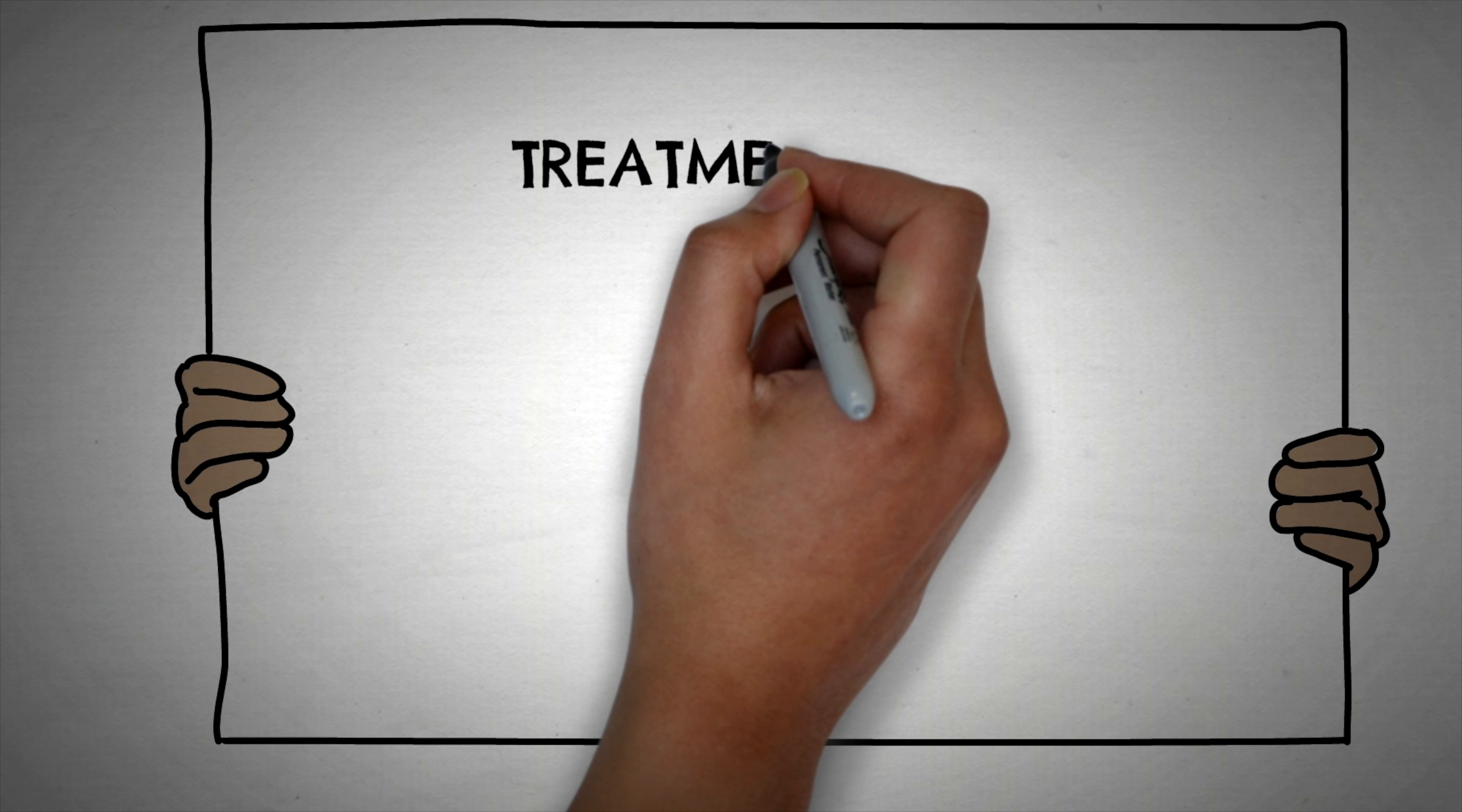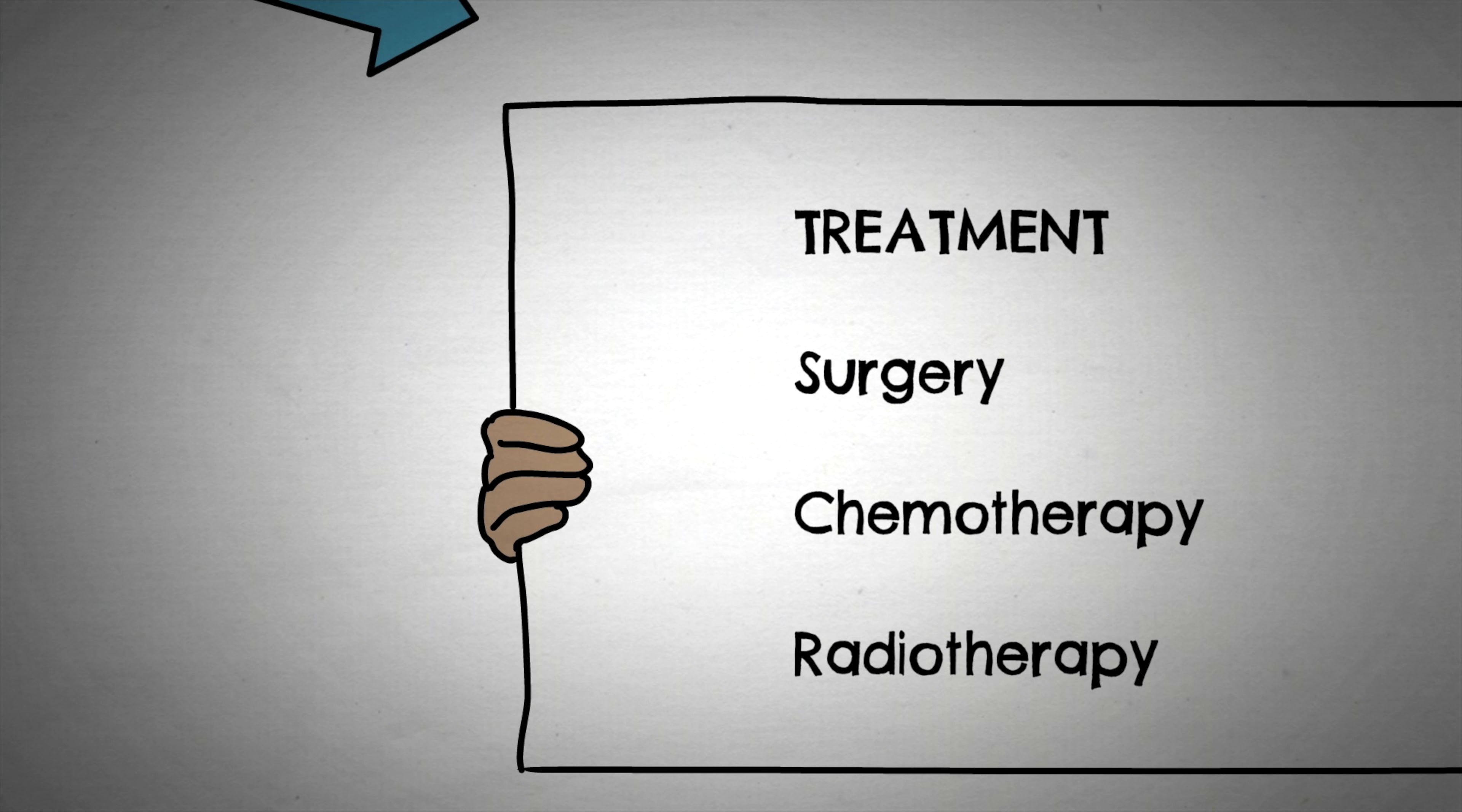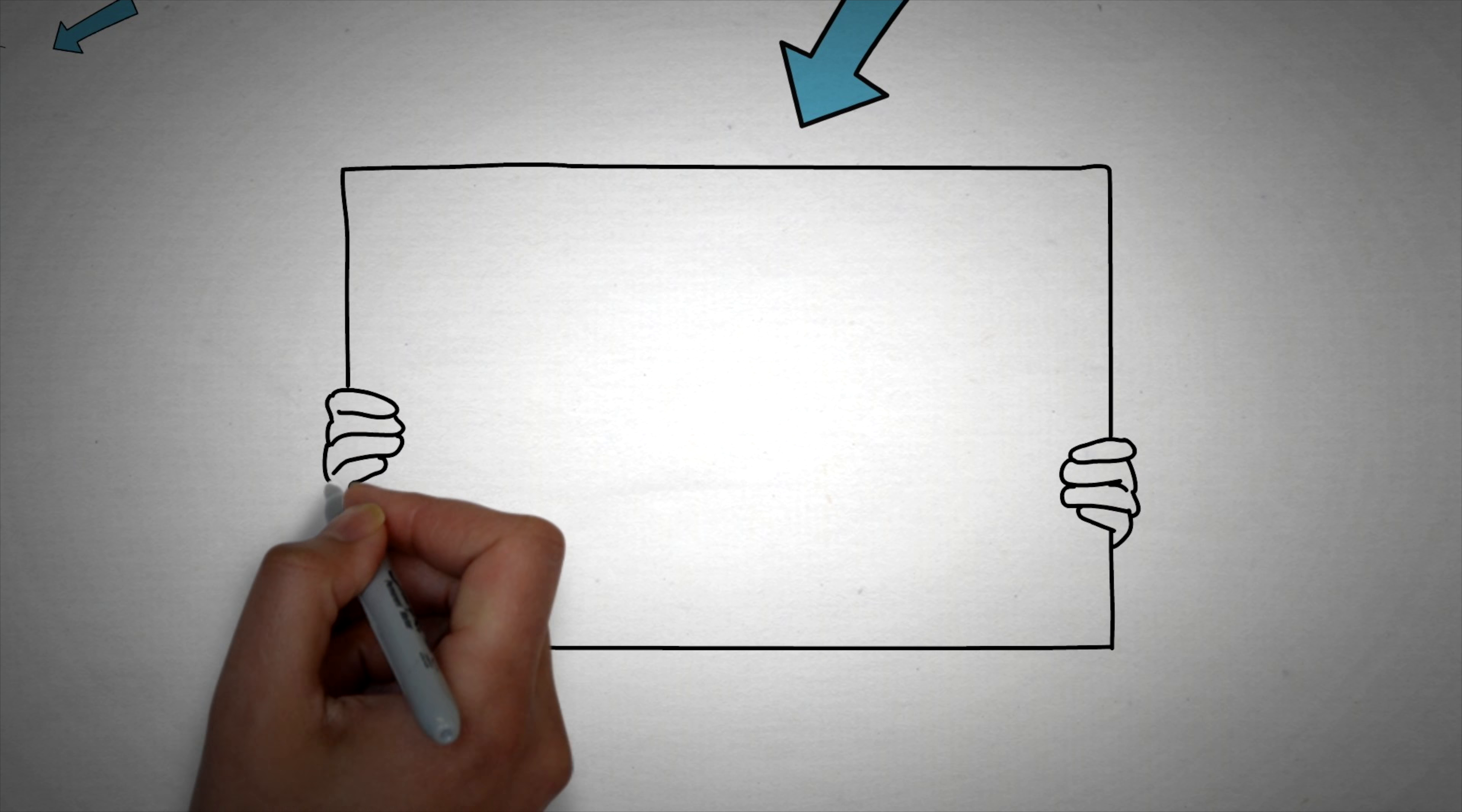Treatment options for kidney cancer include surgery to remove the cancerous portion of the kidney, radiotherapy, and chemotherapy. In some cases, if the cancer is caught early enough, the entire kidney may not need to be removed, and instead, the patient may undergo a partial nephrectomy.